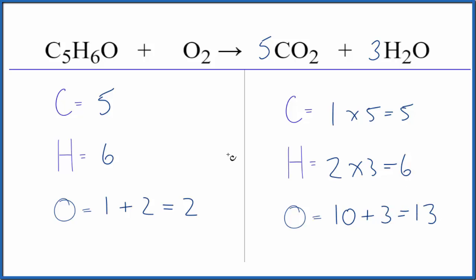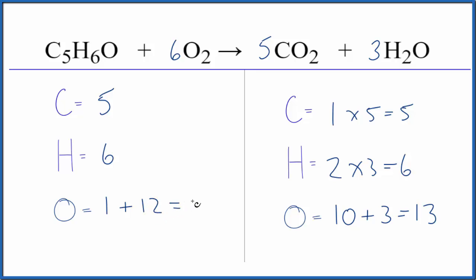So we've got a bit of a problem here — we have thirteen and two, and everything else is balanced. The way to think about this is: one plus some number would equal thirteen. If I put a six here, six times two is twelve, and one plus twelve equals thirteen. So we have one oxygen plus this two times six is twelve, that equals thirteen, and we're done. This equation is balanced.